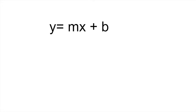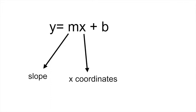So in this formula the m stands for the slope, the x for the x coordinates, and the b for the y-intercept. So this is the place where the line crosses the y-axis. That's the y value or y-intercept.